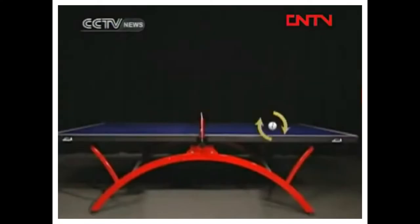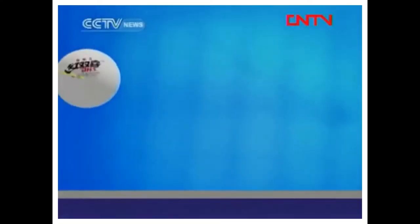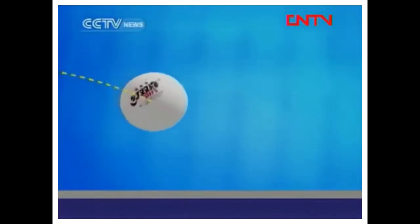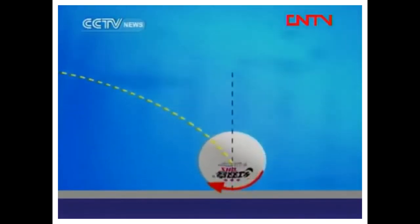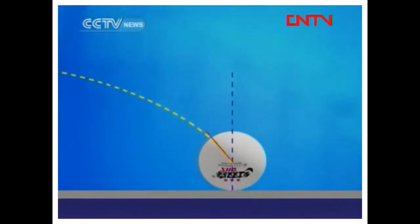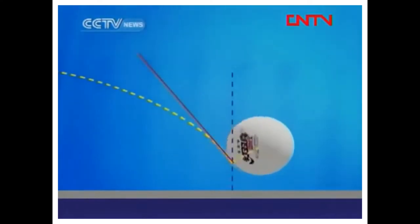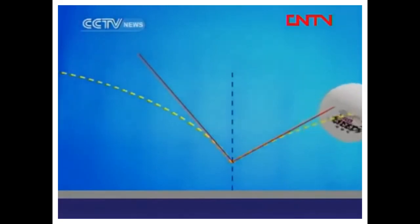Spin and bounce angle: when a topspin ball lands on the table, the spin around the horizontal axis exerts a backwards horizontal force on the table. The reaction force against the friction gets the ball forward acceleration. A topspin ball demonstrates great momentum when it bounces, and its angle of reflection is wider than that of the incidence.